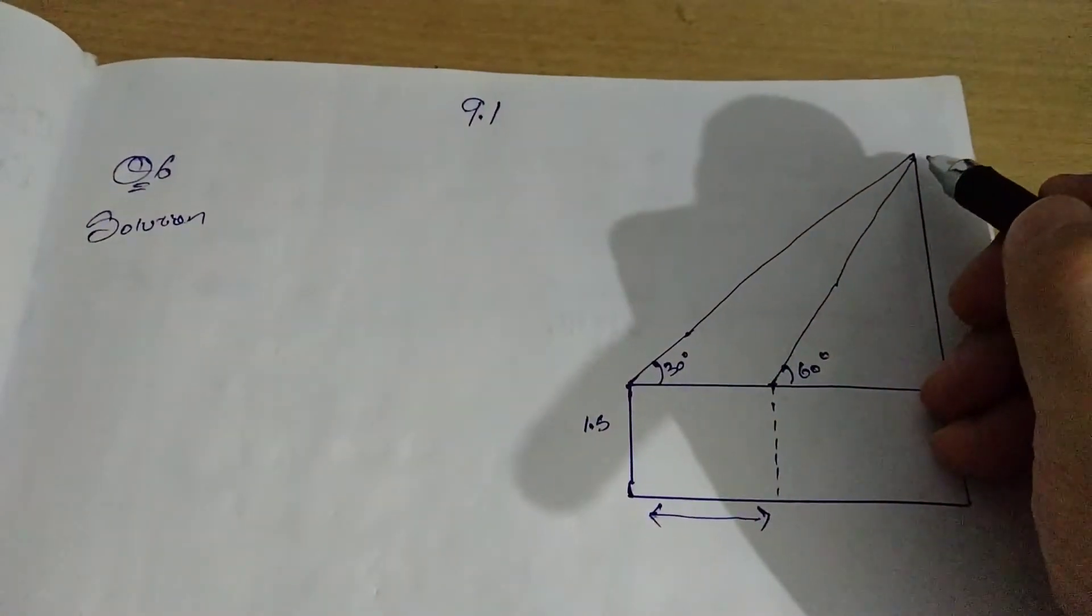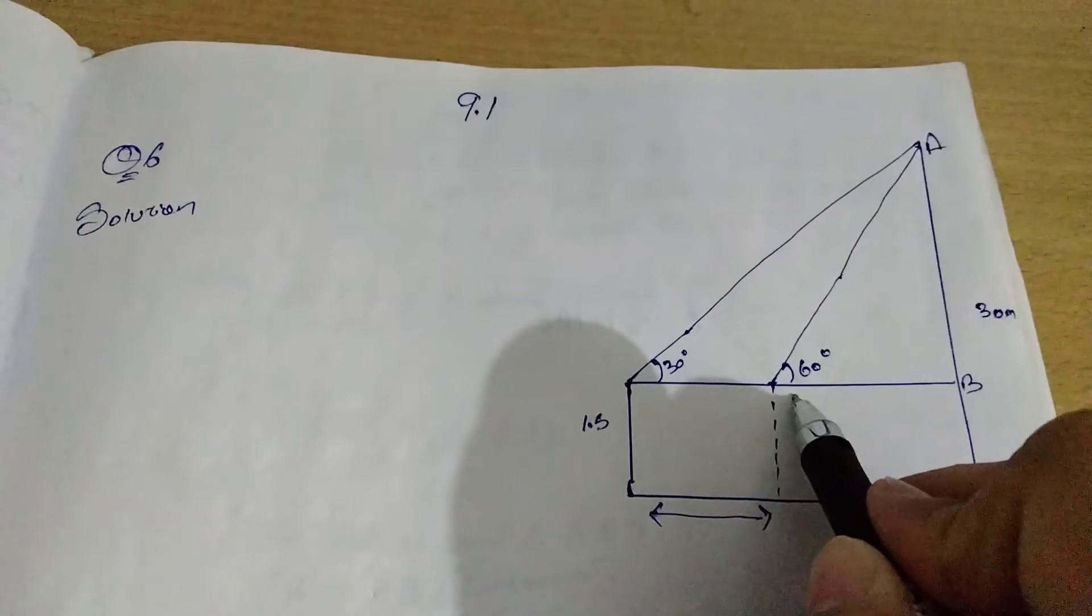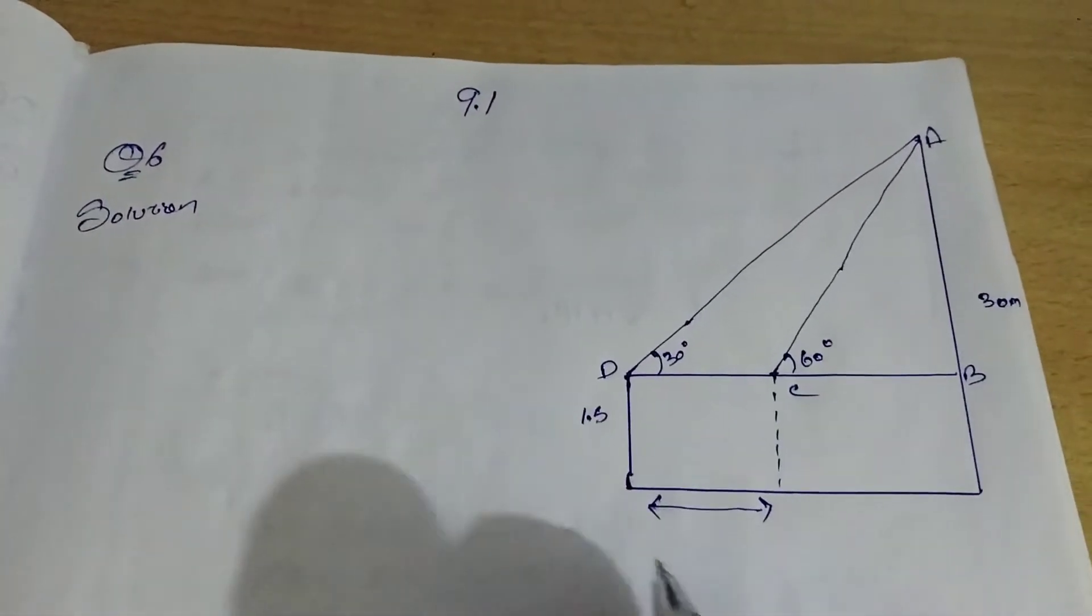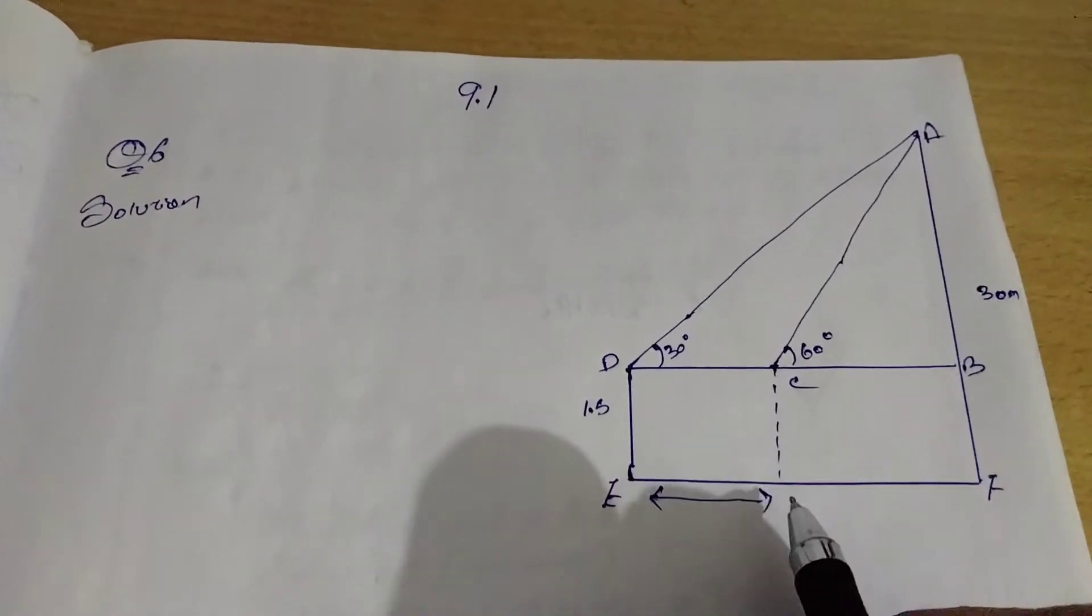Now, I'm going to give this as A, B, C, D. Lower area as E, F, and G.